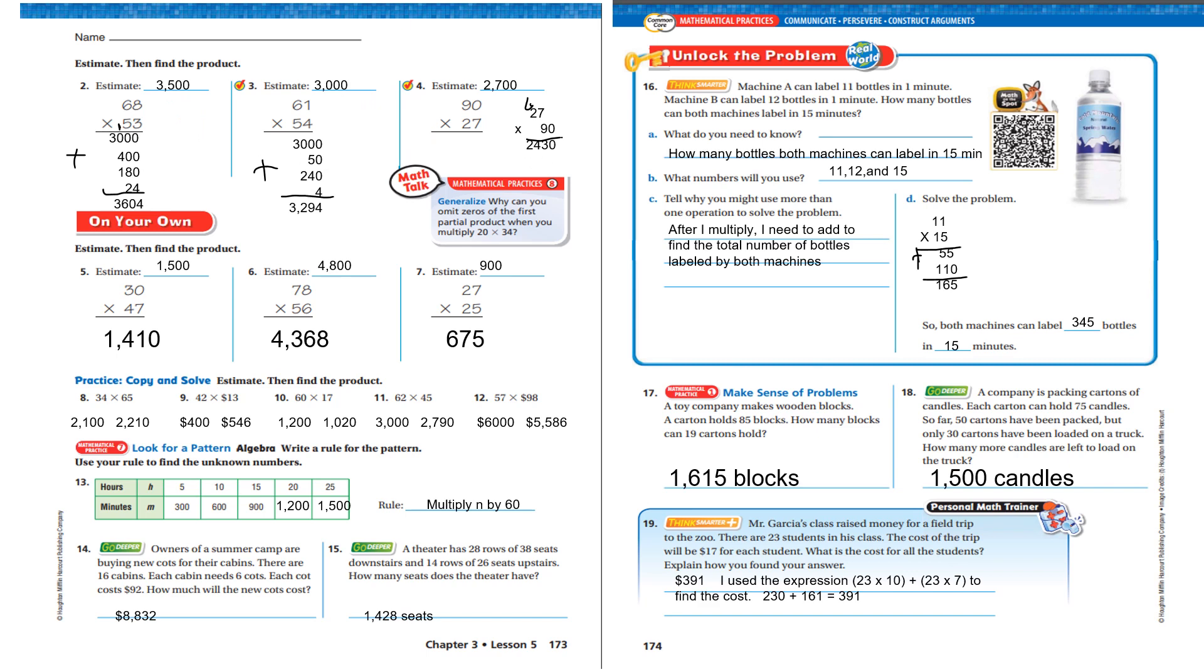Okay, boys and girls, if you are in my class and you missed anything, 5, 6, 7 through 12, you need to get in touch with me, contact me, so we can meet and go over this individually. The estimate of 30 times 47 is 1,500. When you did the math out, you got 1,410. The estimate is 4,800. Your answer is 4,368. Your estimate is 900. Your answer is 625. If you missed one of those, go back and do it again.